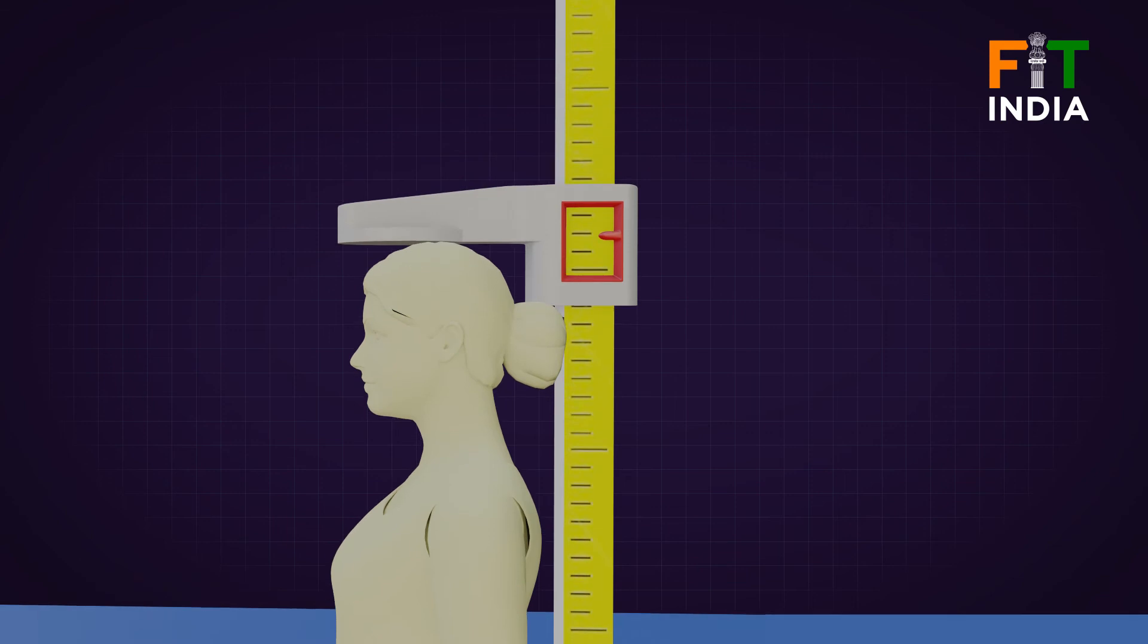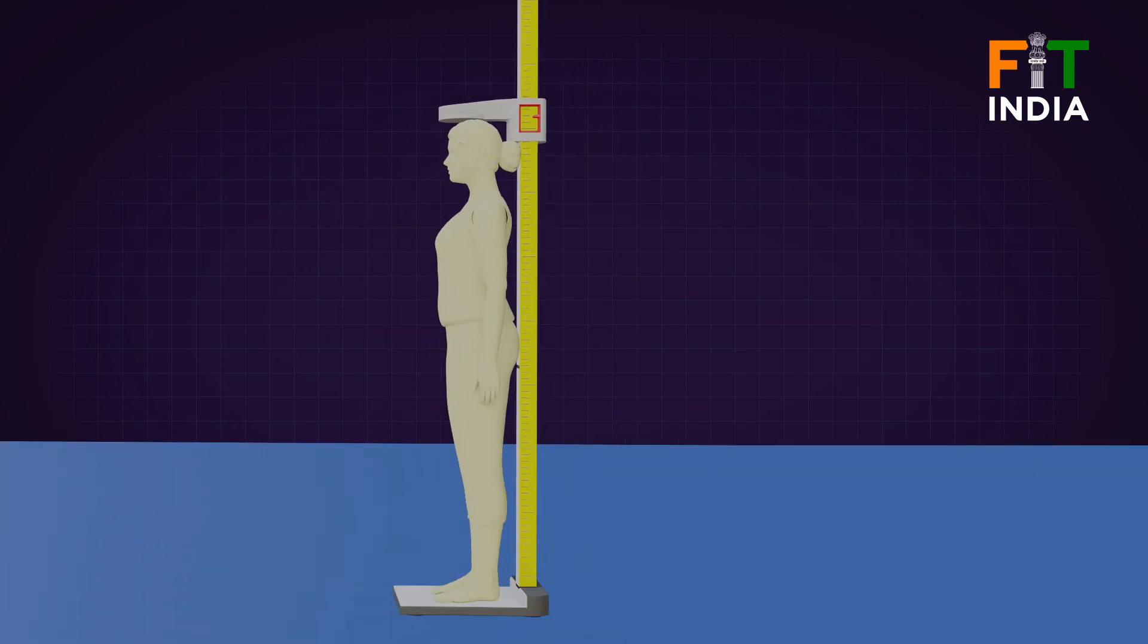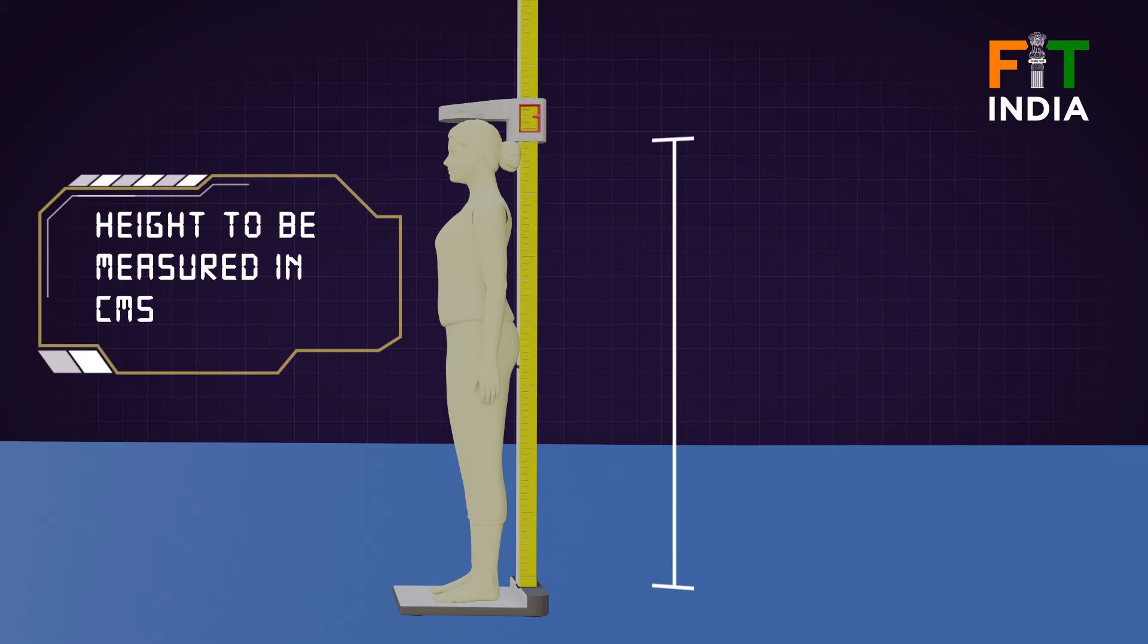Lower the headpiece until it firmly touches the crown of the head. The height should be recorded to the nearest 0.1 cm.